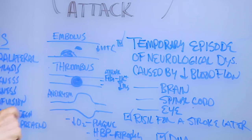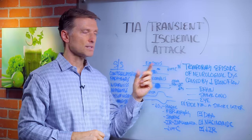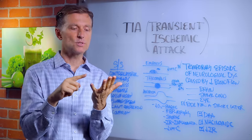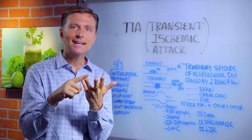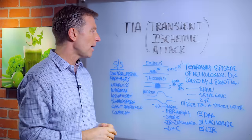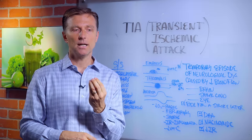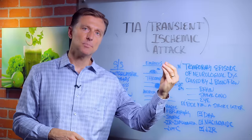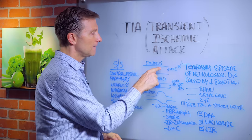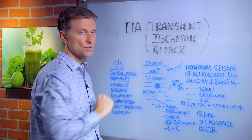There are three main mechanisms. The first one is called an embolus. Envision you have plaquing in the artery, which is composed of cholesterol, calcium, and fibrous tissue. Part of that plaque broke off and then plugged up a vessel somewhere else in your body — that would cause a TIA or a stroke.